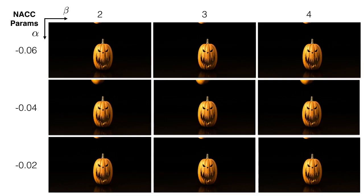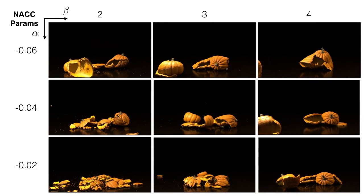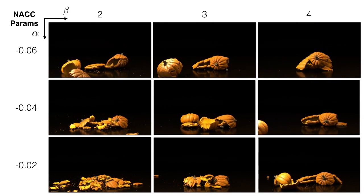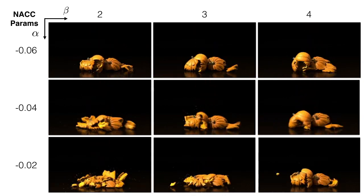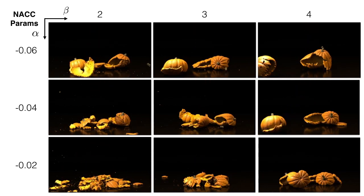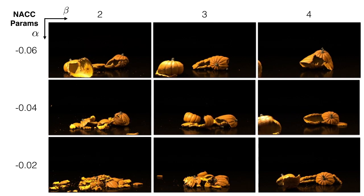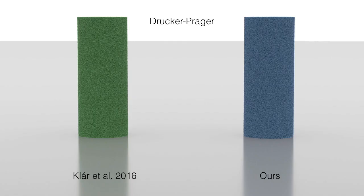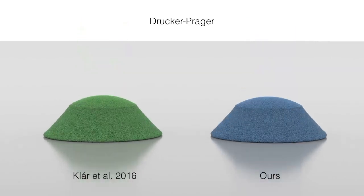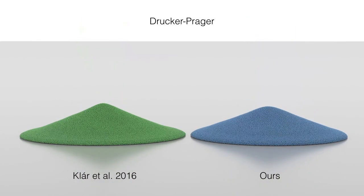Here we show the effect of changing cohesion (beta) and hardening (alpha) for controlling the desired fracture appearance. Our general return mapping also works with the von Mises and Drucker-Prager yield surfaces.